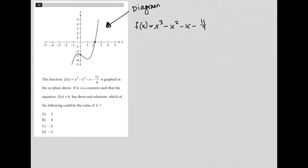If k is a constant such that the equation f(x) = k has three real solutions. Okay, so real solutions. So what does that mean? Real solutions when it comes to graphs, and a lot of students don't know this, but real solutions literally just means x-intercepts. Real solutions are y = 0.